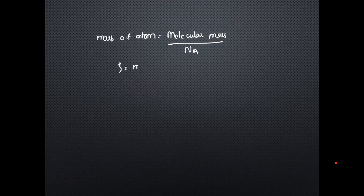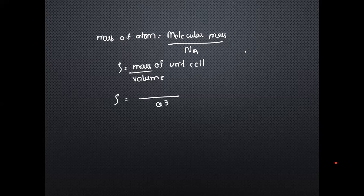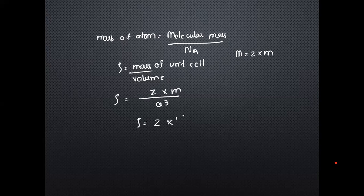Density equals mass by volume. Volume equals a³. Mass of the unit cell is Z × M, where M (capital M) is the molecular mass divided by Avogadro's number. So density D = Z × M divided by a³ × Avogadro's number. This is how you find the density of a unit cell.